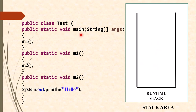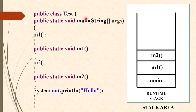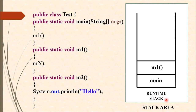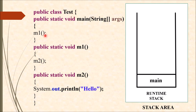After creation of the thread it will first load all executing methods into the runtime stack. It will first load the main method since execution of Java begins with main. Then control comes to m1, which gets loaded into the runtime stack, then m2 is loaded into the runtime stack. Inside m2 we are just printing text, so nothing further is loaded. After printing the hello text, m2 will be erased from the runtime stack, then m1 is also erased, and then main is erased.